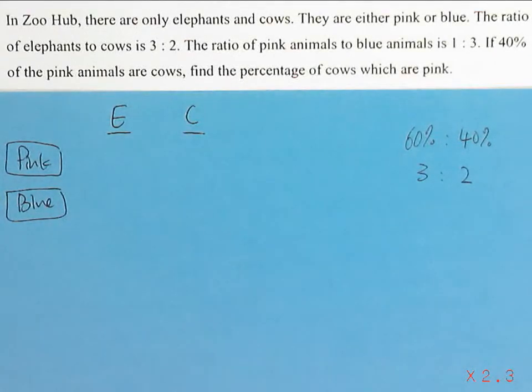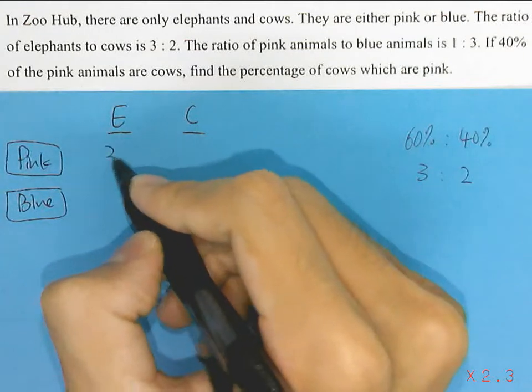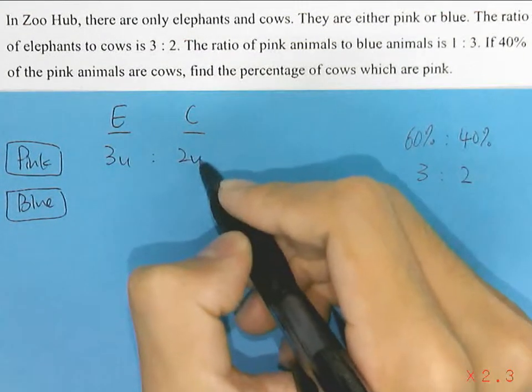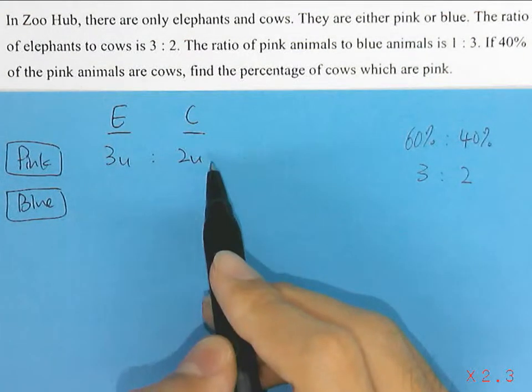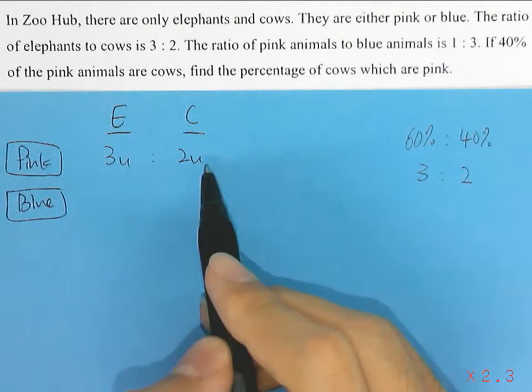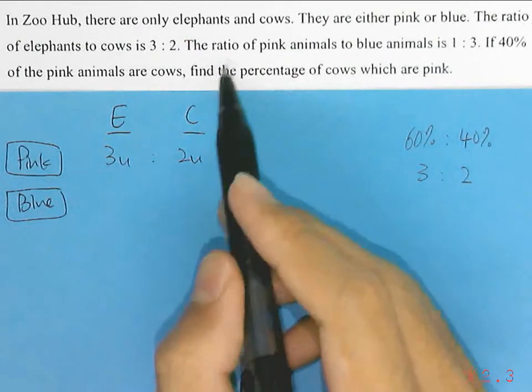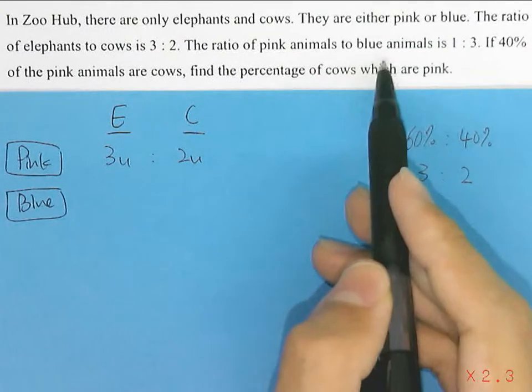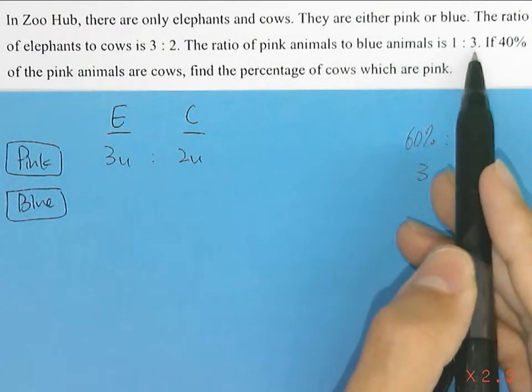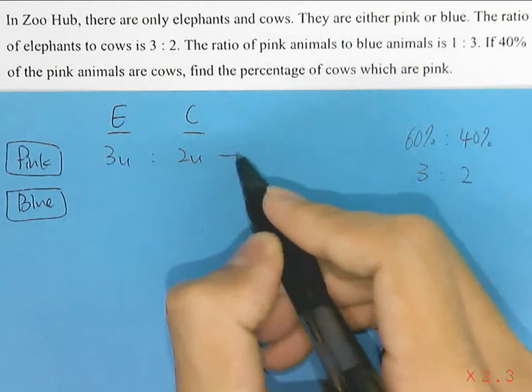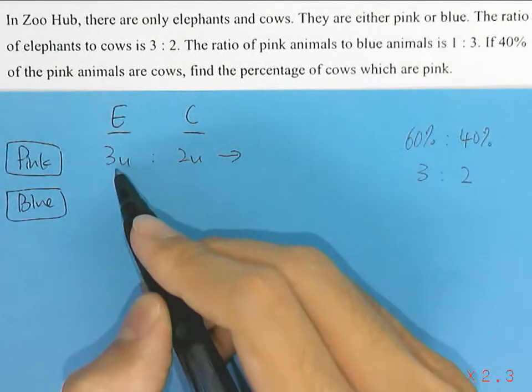From here we can express the ratio of pink elephants to pink cows as 3 units to 2 units. The question also tells us that the ratio of pink animals to blue animals is 1 to 3. The total number of pink animals is 3 units plus 2 units, which equals 5 units.